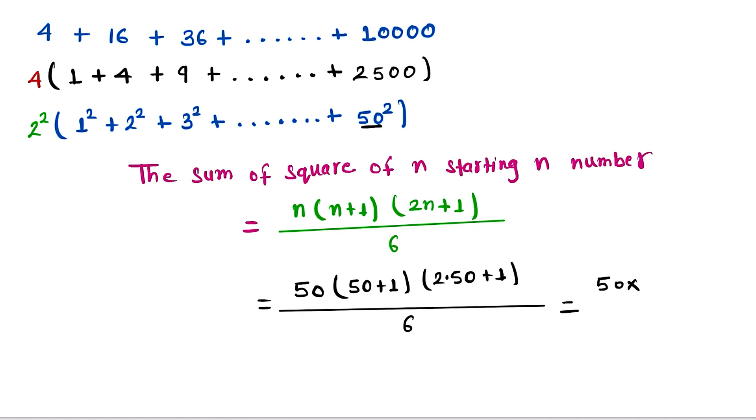Here 6 and 50 cancel out, giving us 3 and 25. Now 3 cancels with 51 to give 17. So we can write 25 × 17 × 101. This value is the sum of 1² + 2² + 3² + ... + 50².